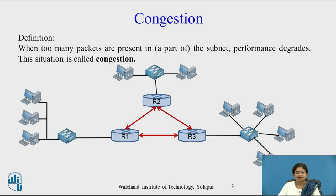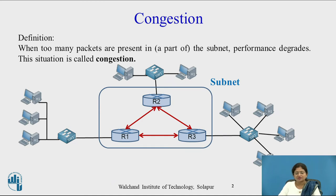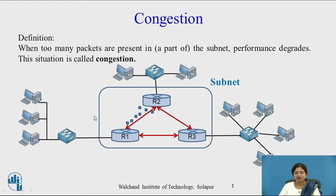Look at this diagram. In this diagram, three LANs are connected to three routers: R1, R2, and R3. These three routers are connected with each other via communication lines, forming the subnet. Now, consider if there is heavy traffic from router 1 to router 2, and some packets are saturated at the R2 side. Then R2 is not able to retrieve those packets, and this situation is known as congestion.